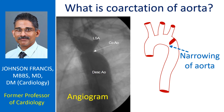Coarctation of aorta is a birth defect of the aorta, the largest blood vessel supplying oxygenated blood to the whole body. It is a narrowing which typically occurs at the end of the arch of aorta after the origin of the blood vessel to the left arm.